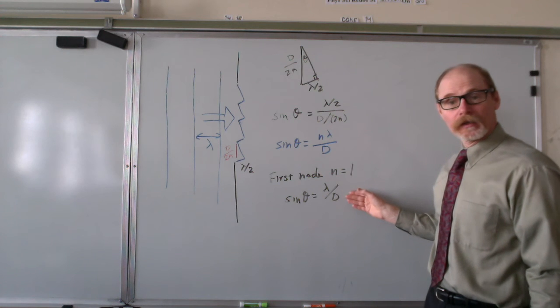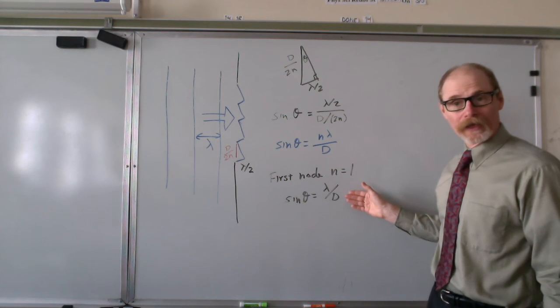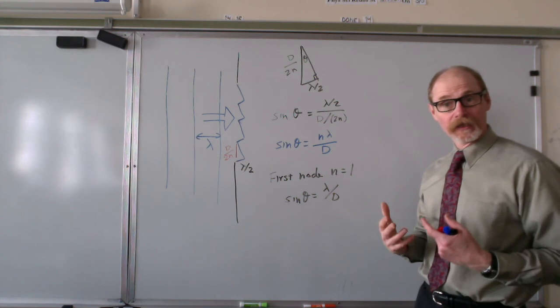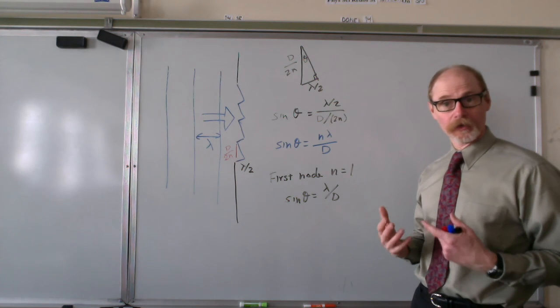When the slit gets wider than one wavelength, then you can start to see you have a chance of getting interference. You can get a node.